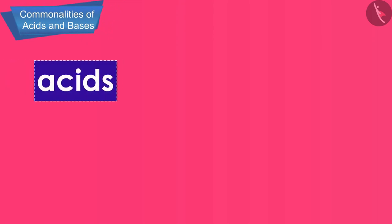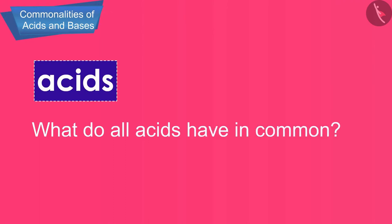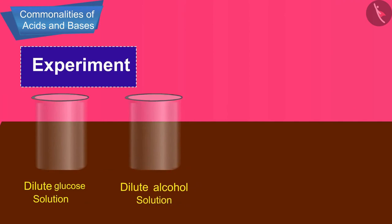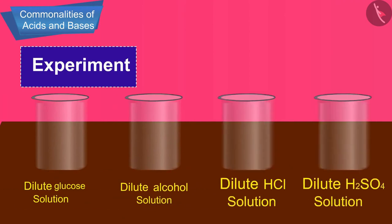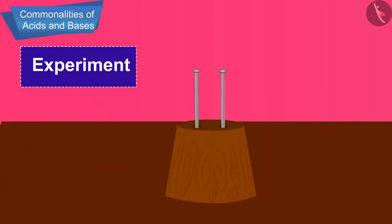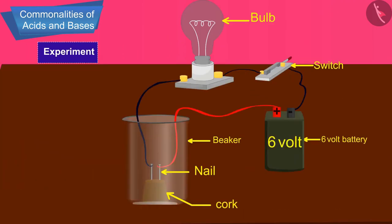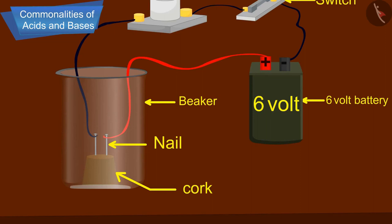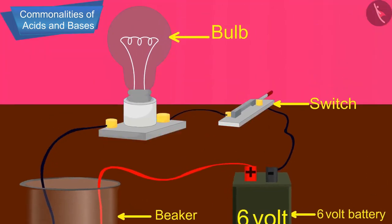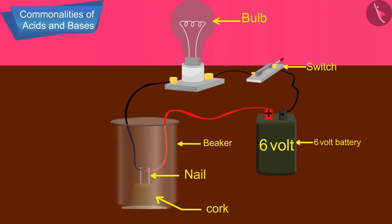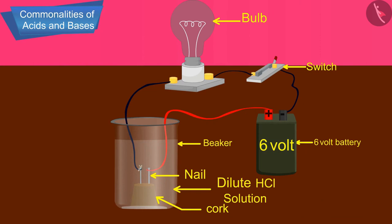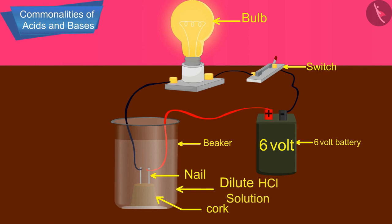Let us first discuss what all acids have in common. For this we will conduct an activity. Take solutions of glucose, alcohol, hydrochloric acid, sulfuric acid, etc. Fix two nails on a cork and place the cork in a 100 ml beaker. Connect the nails to the two terminals of a six-volt battery through a bulb and a switch, as shown in the figure. Now pour some dilute hydrochloric acid in the beaker and switch on the current.